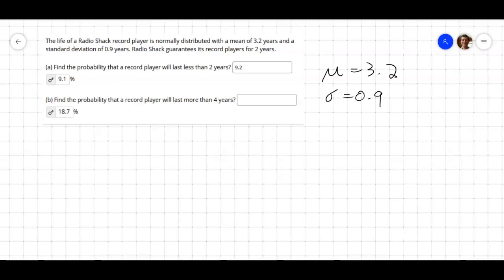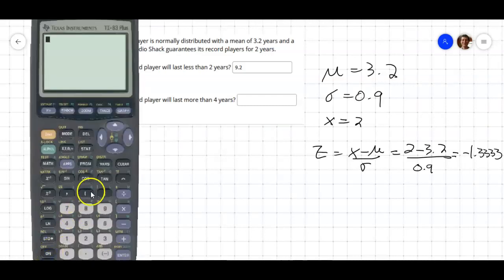The first question is about the probability the record player will last less than two years. So we need to look up the z-score if we're dealing with 2. The z-score formula is x minus mu over sigma. So we have 2 minus 3.2 divided by 0.9, and we work this out, and it's negative 1.3333. Let's just double check. Pull up a calculator. 2 minus 3.2 divided by 0.9. There we go.